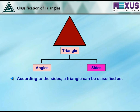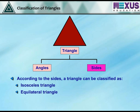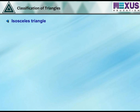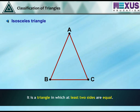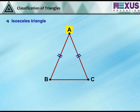According to the sides, a triangle can be classified as an isosceles triangle, equilateral triangle or scalene triangle. Isosceles triangle: a triangle in which at least two sides are equal is an isosceles triangle. In the given figure, ABC is an isosceles triangle as AB is equal to AC.